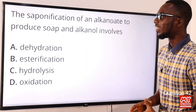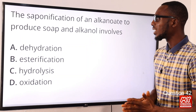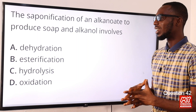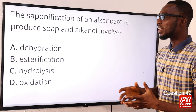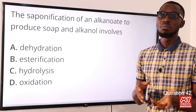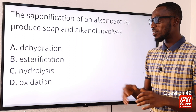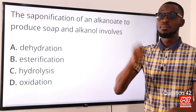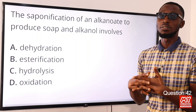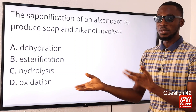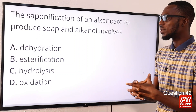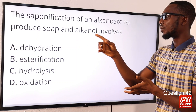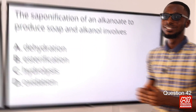Question 42: The saponification of an alkanoate to produce soap involves what? Saponification is the hydrolysis of fats and oils with caustic alkalis to yield propane-1,2,3-triol (glycerol) and sodium or potassium salts of the component fatty acids. The correct option is option C — hydrolysis.